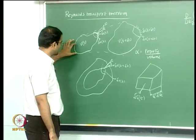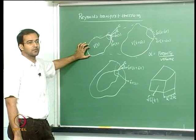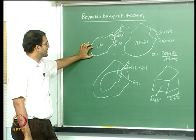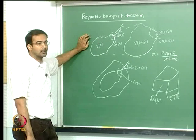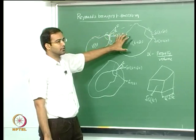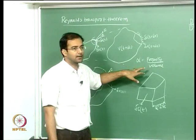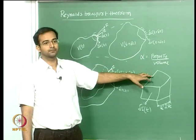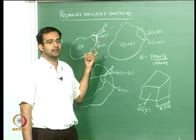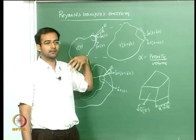Here we consider a control mass — essentially a system — meaning we consider a fixed packet of fluid with a given mass and track it with respect to time. If you assume there is a fixed mass of fluid with volume V at time T, after some time T plus delta T the volume changes but the mass content remains the same. If we define any property alpha as a property per unit volume, this is the traditional Lagrangian approach where the observer travels along with the moving frame of reference of the fluid packet.